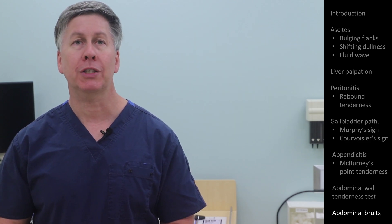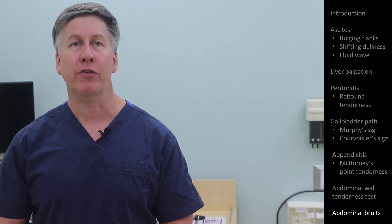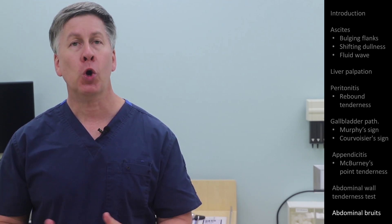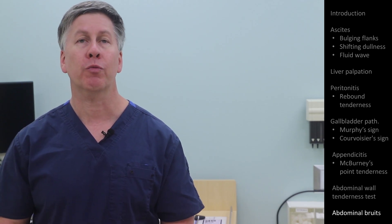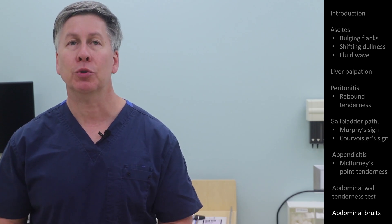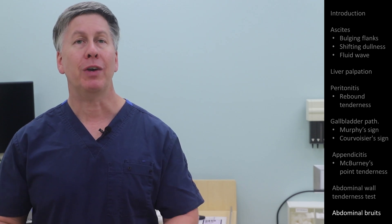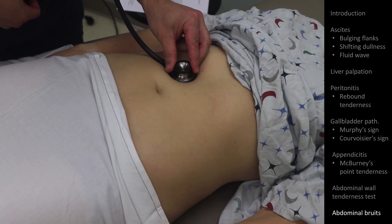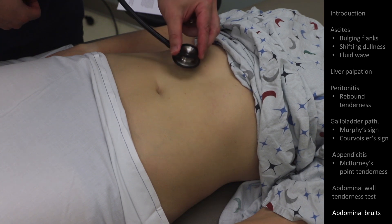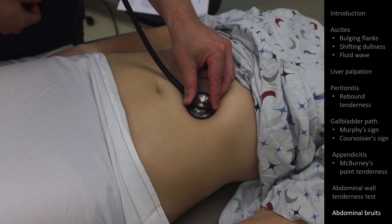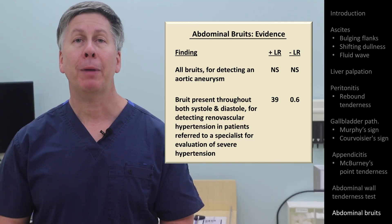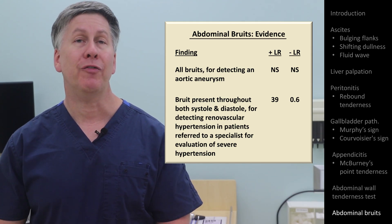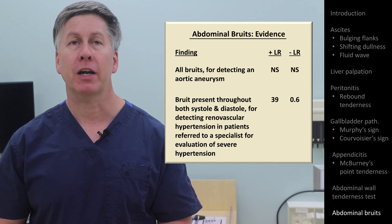While it's common to hear clinicians discuss bruits as a sign of an aortic aneurysm, it has not been shown to be diagnostically helpful for that particular condition. However, the presence of a bruit is helpful for diagnosing renal vascular hypertension — a form of secondary hypertension caused by stenosis of one or both renal arteries, which tricks the downstream kidney into thinking the individual is dehydrated, resulting in inappropriate increase in activity within the renin-angiotensin-aldosterone axis. The appropriate place to listen is in the epigastrum on both sides of the midline. Among patients referred for evaluation of severe hypertension, the presence of a combined systolic-diastolic bruit had a positive likelihood ratio of nearly 40 for renal vascular hypertension, making this finding pathognomonic.